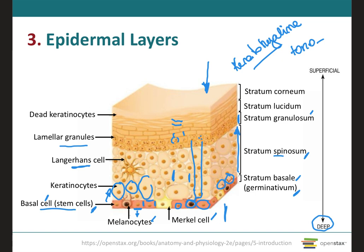As their nuclei break down during apoptosis, the keratinocytes of the stratum granulosum can no longer carry out vital metabolic reactions, and as they move up into the stratum lucidum and stratum corneum, they will die. Therefore, we can say that the stratum granulosum is the layer that marks the transition between the deeper, metabolically active strata and the dead cells of the more superficial strata.